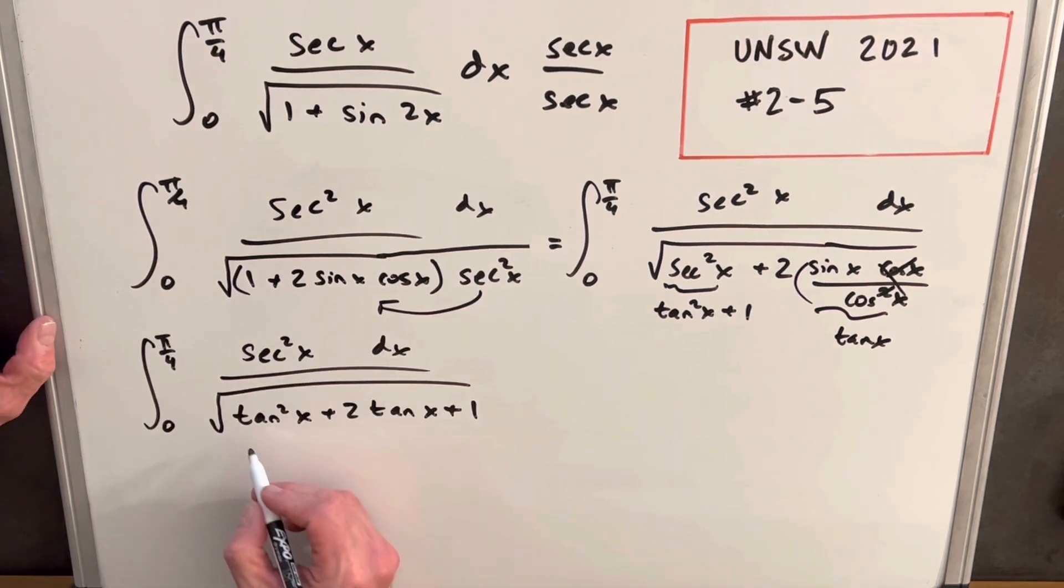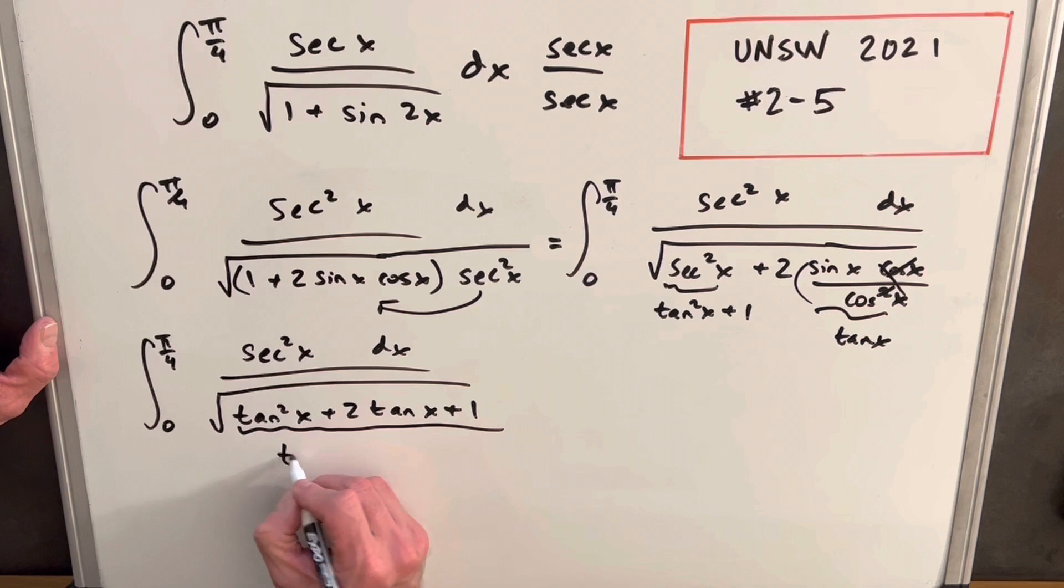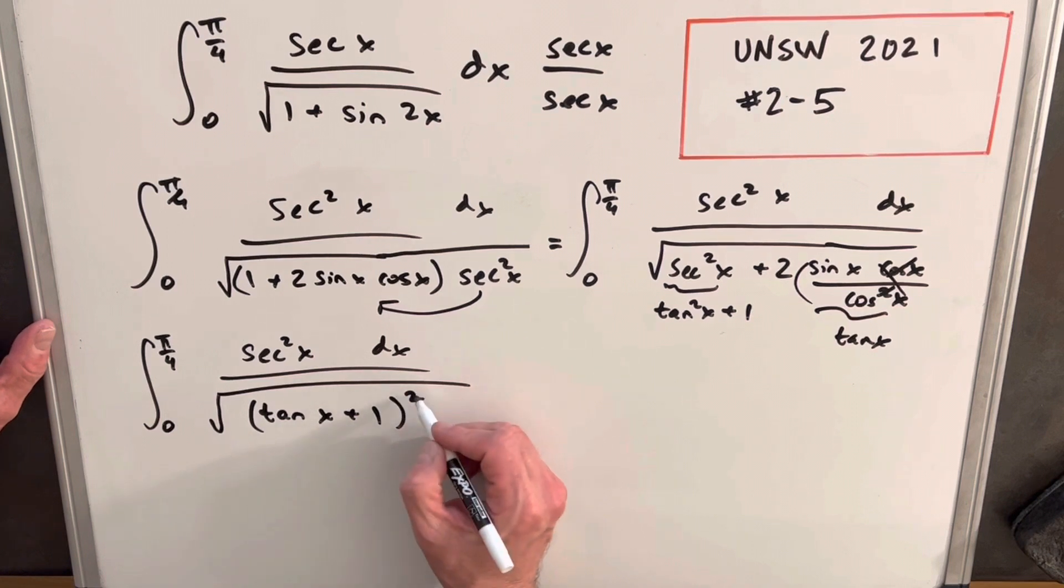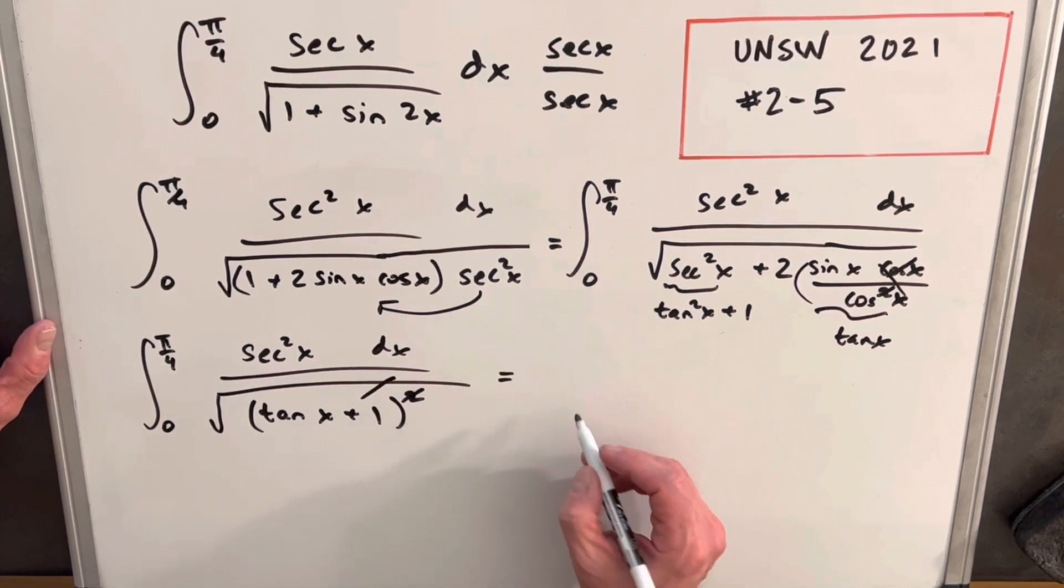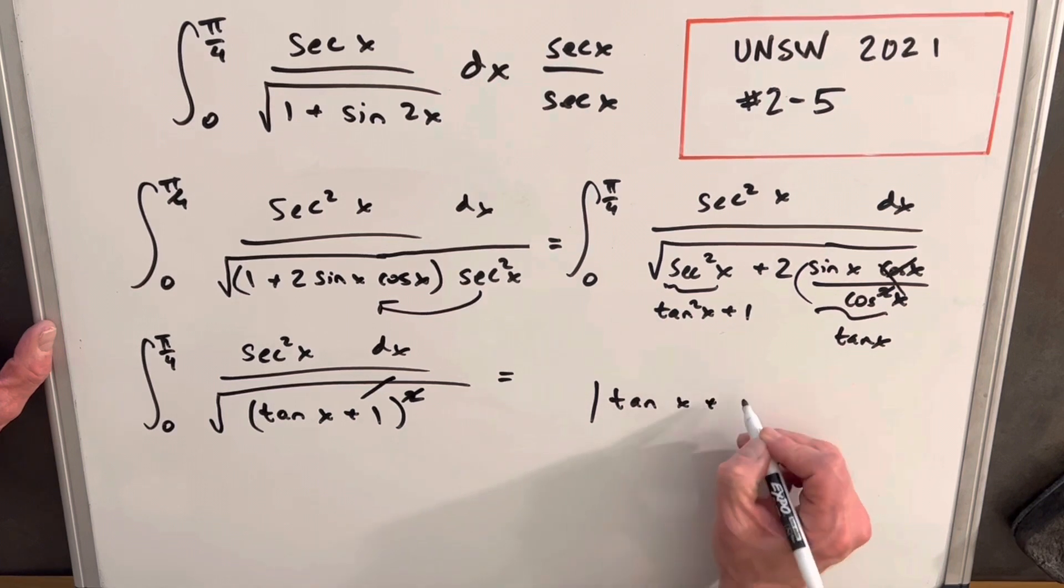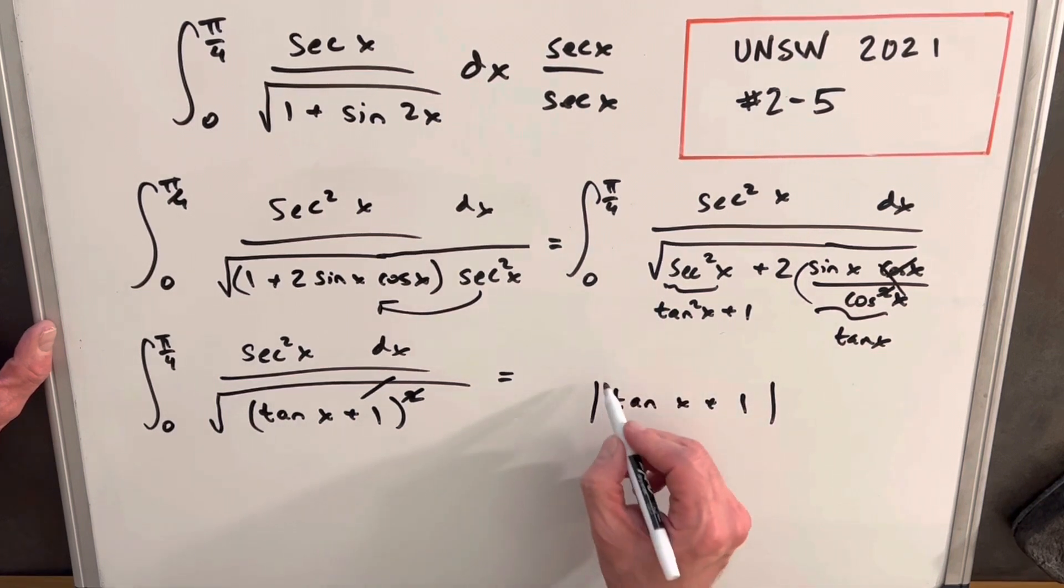And then from here we can notice this is actually factorable. We can actually write this as just tan x plus one all squared. Then from here the square and the square root are essentially going to cancel. But we need for now to preserve an absolute value sign around our tan x plus one so that that's never negative.